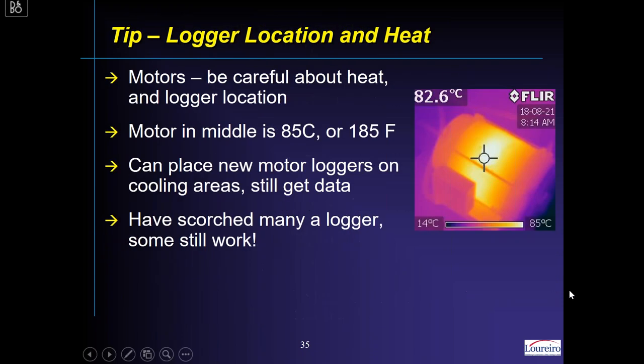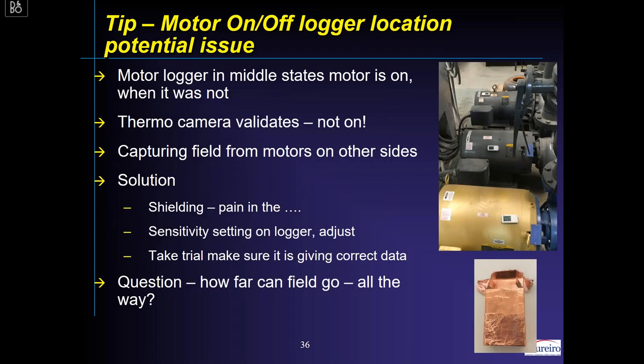Be careful about heat when placing motor loggers — this comes from experience having scorched some loggers that no longer work. Motors can get hot. We almost always use a thermal camera or infrared thermometer first. This particular motor is 85°C or 185°F in the middle — you can put a motor on/off logger on it, but I would not put it over the 185°F hot area. Place it towards the two sides of the motor which may be under 100°F. That difference can matter a lot, and you may not have a logger left when you return.